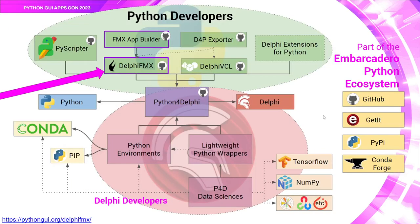This is the Embarcadero Python ecosystem and shows where Delphi FMX fits in. Embarcadero sponsors PyScripter, a Python IDE. There's Delphi FMX, the cross-platform wrapper around FireMonkey, and also the Delphi VCL Python package, a wrapper around the Delphi VCL library for Windows 32 and 64. You can export forms using the D4P exporter to use in Delphi FMX. There's also an FMX app builder for Android applications, and on the Delphi side you can access Python using Python for Delphi. Delphi uses the Object Pascal language, and RAD Studio also includes C++ Builder.